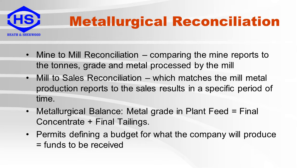Mine-to-mill reconciliation compares the mine reports to the mass, grade, and metal processed by the mill. Mill-to-sales reconciliation matches the mill metal production report to the sales results in a specific period of time. Metallurgical balancing is where the metal mass in the plant feed equals the metal mass of the final concentrate and final tails. It permits defining a budget of how much metal a mill will produce and therefore the funds to be received.